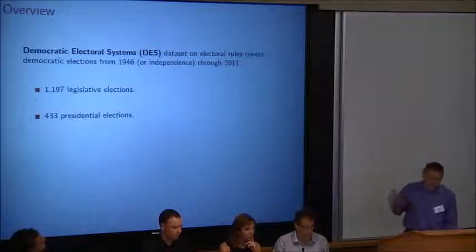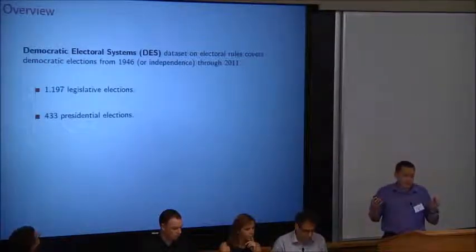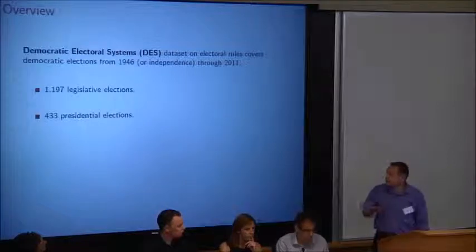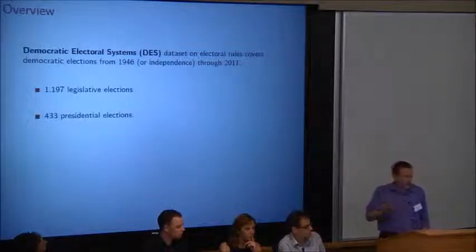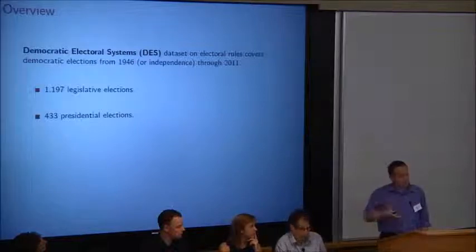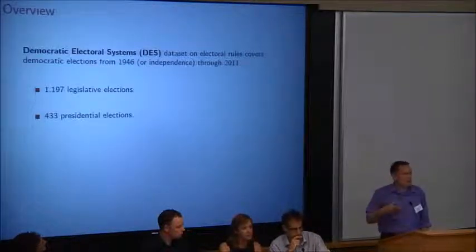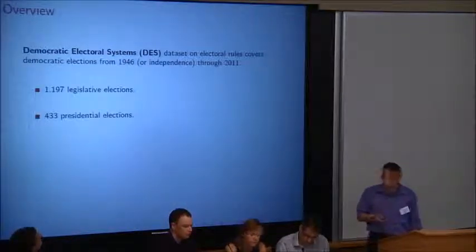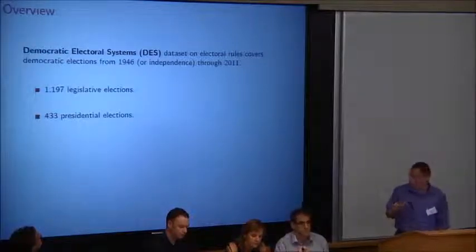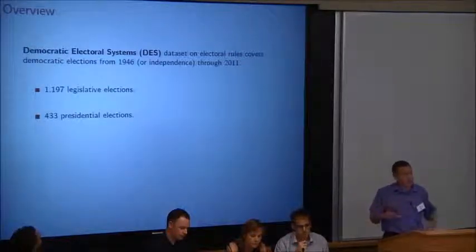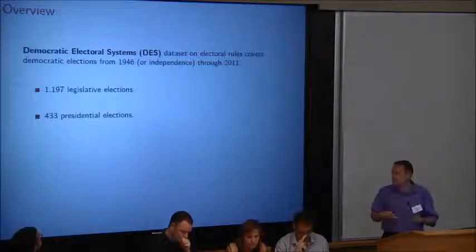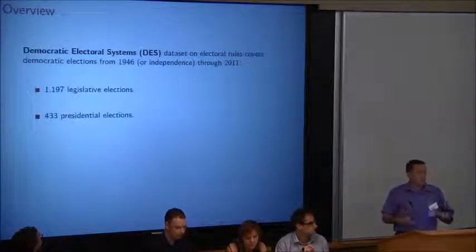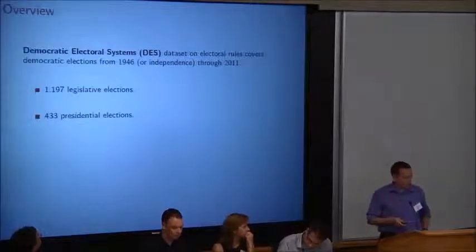The paper's really an extension, it's a research note that describes an extension of the dataset that some of you may have used on electoral systems in democracies. And it extends the dataset from 1946 or independence to 2011. It makes the dataset that I had before about a third, it's about 33, 34% larger than the original dataset. We've got slightly over 1,000 legislative elections and 433 presidential elections. One of the things that we try to do with the dataset was we try to put a little bit more detail in. So, now we've got dates of each rounds of elections, we've got formulas in each of the different tiers, not just in the electoral tier. So, there's a little bit more detail going back to the previous elections as well as the new elections that we've added.